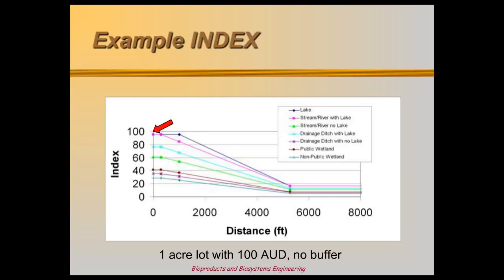The top index value shows discharge impact to a lake. If this feedlot is less than 1,000 feet from shore, the index value is about 98. The farther the distance, the lower the value — up to a mile from a lake, the index value drops and levels at 18. The same feedlot that runs off to a non-public wetland rates a 27 if close, and the index drops to 8 at one mile.